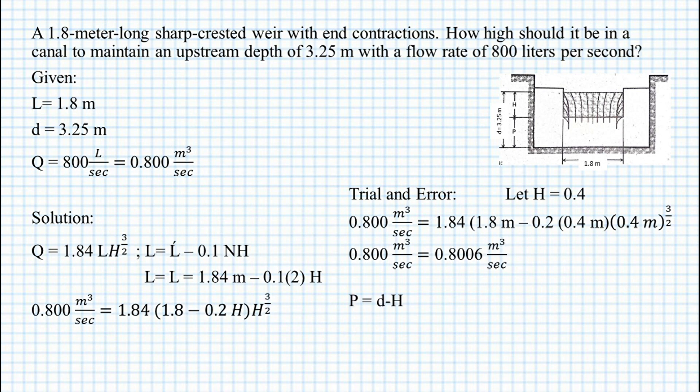In solving for the height of the canal, we are going to use the formula: height, denoted as P, is equal to depth minus the head. Plugging in the values, we have 3.25 meters minus 0.4 meters. So the value of the height is equal to 2.85 meters. That's all for today, thank you for watching.